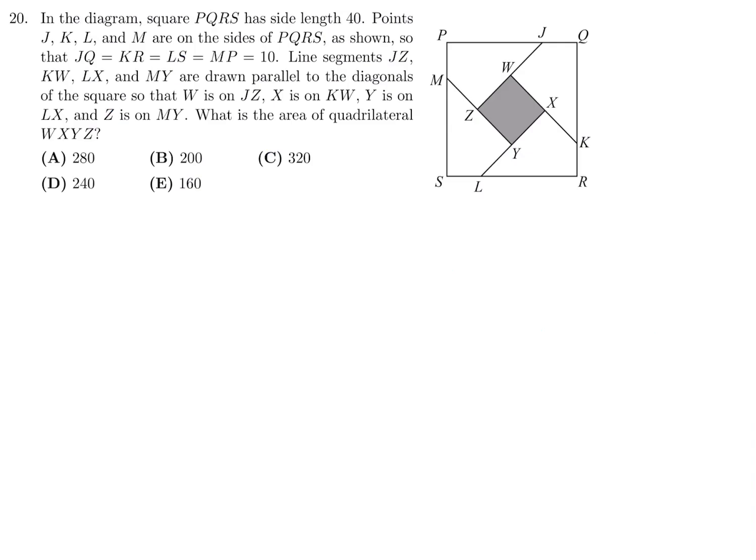In the diagram, square PQRS has side length 40. Points J, K, L, M are on the sides so that JQ equals KR equals LS equals MP equals 10. Line segments JZ, KW, LX, and MY are drawn parallel to the diagonals of the square, where W is on JZ, X is on KW, Y is on LX, and Z is on MY. What is the area of quadrilateral WXYZ?